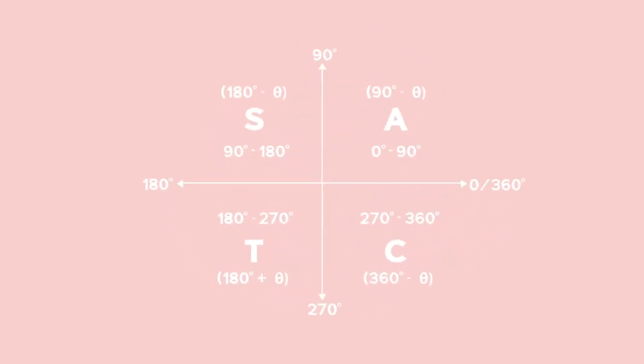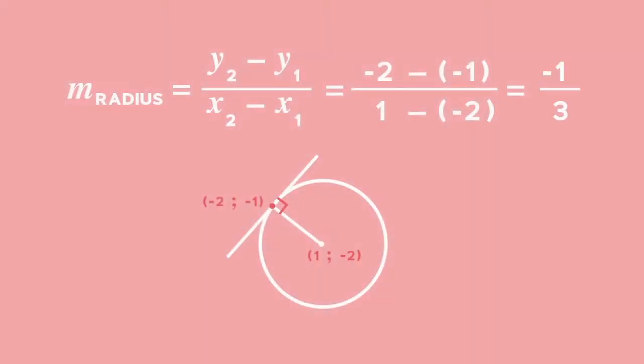Analytical geometry, also referred to as Cartesian or coordinate geometry, uses algebraic methods to represent and solve geometry problems.